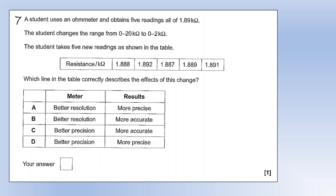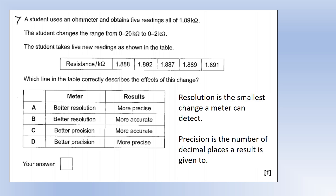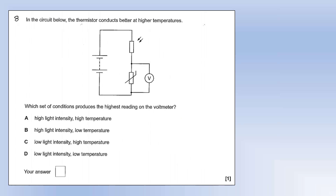Question 7: a student uses an ohmmeter, gets five readings of 1.89 kΩ, then changes the range from 0–20 to 0–2. Resolution is the smallest change a meter can detect — changing the range improves the resolution of the ohmmeter. Precision is the number of decimal places a measurement is stated to — the new readings are more precise. That gives option A.